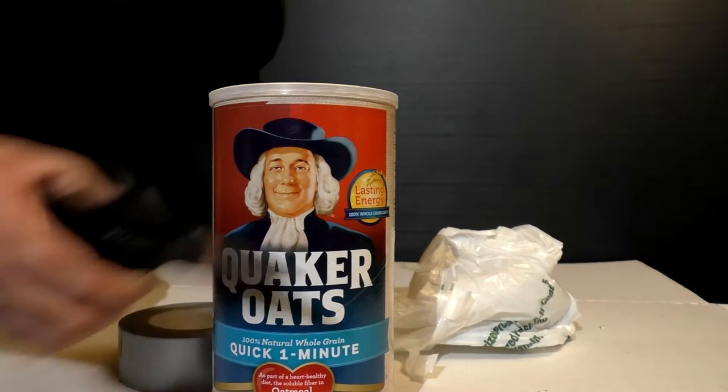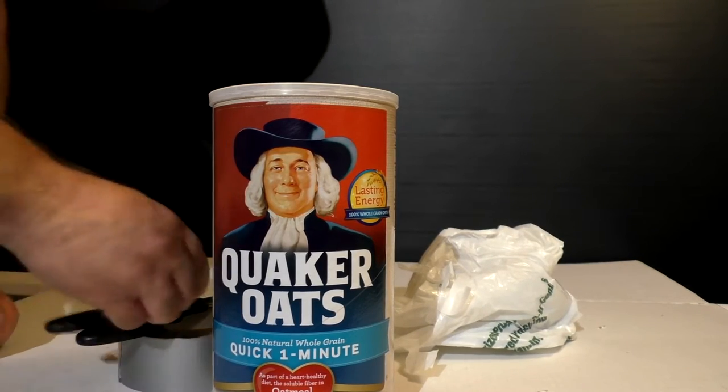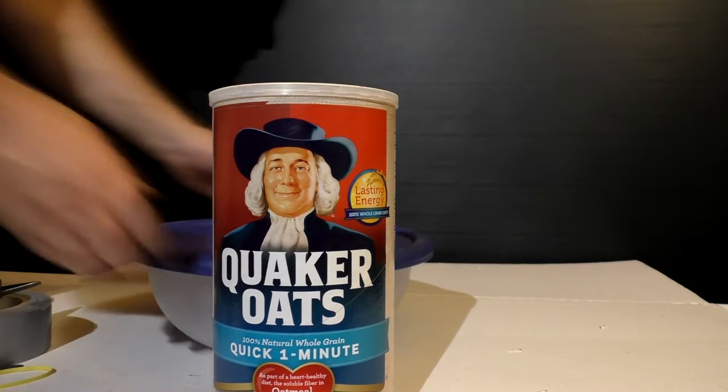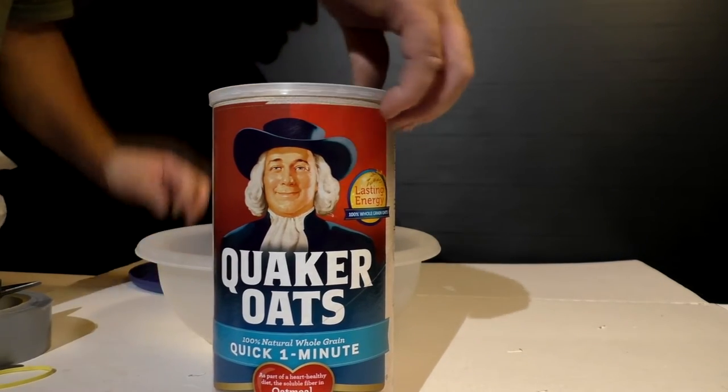Some duct tape, scissors, a little bit of electrical tape, a rubber band, a utility knife, and a butter knife. Now to start it out, empty your container of oats out of there.